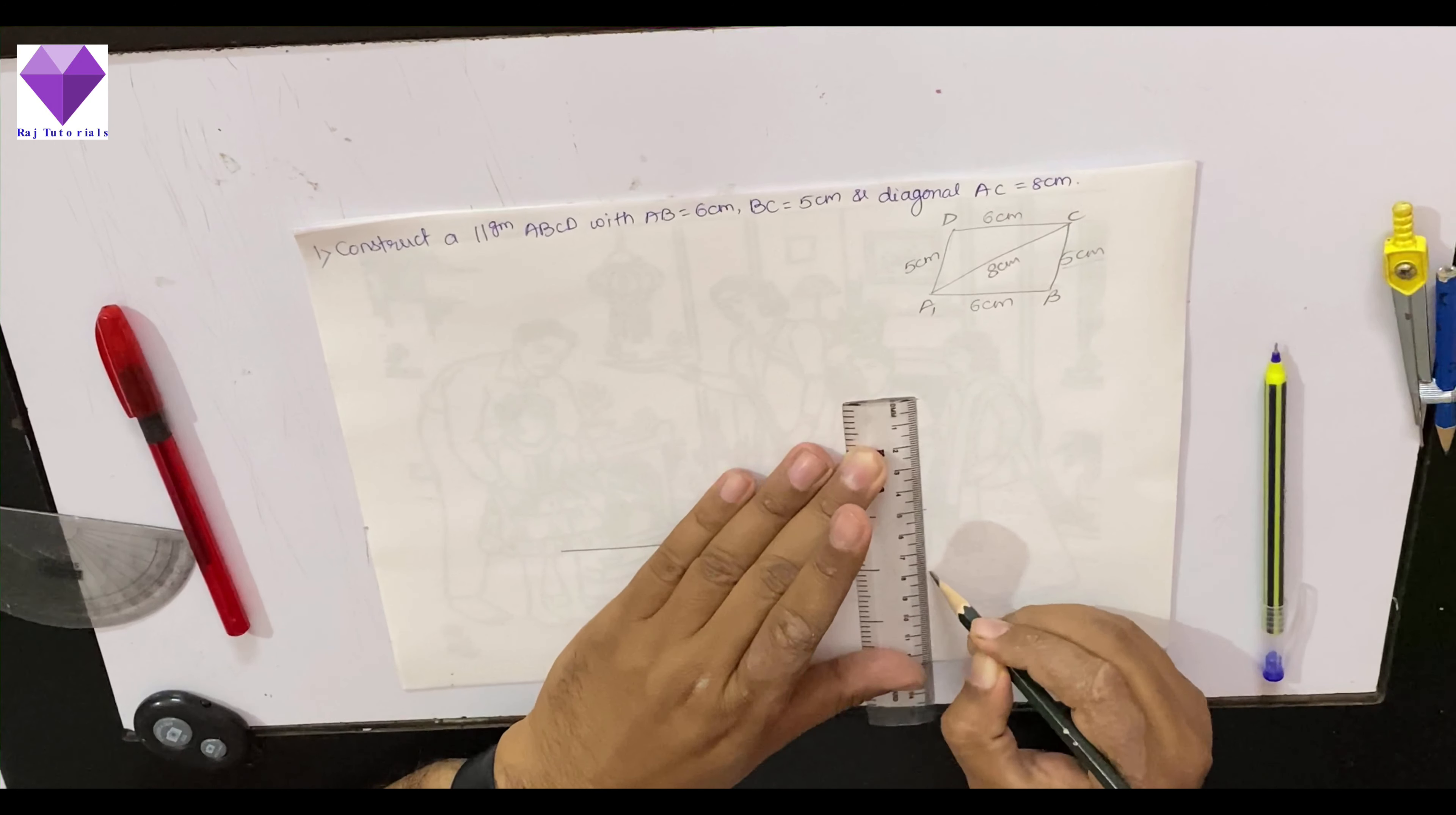With the compass measuring 5 cm, this point is my AB, 6 cm. Now, with B as center and at a distance of 5 cm, I will mark an arc.